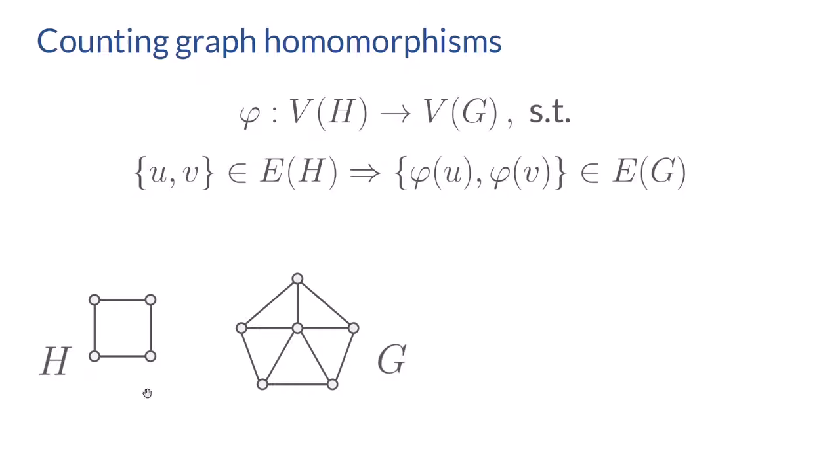Consider the following example. If this is the graph H and this is the graph G, then this is the image of a homomorphism from H to G, and this as well, but also this one because the homomorphism does not need to be injective on the vertices. On the other hand, this is not the image of a homomorphism from H because we cannot map two adjacent vertices to a vertex without a self-loop.